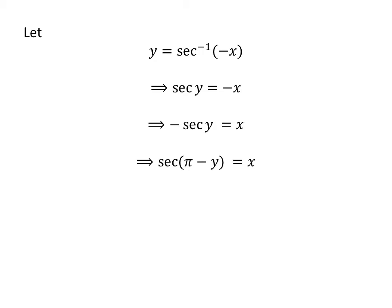So secant of π minus y is equal to x. As arc secant is the inverse function of secant, π minus y is equal to arc secant of x.